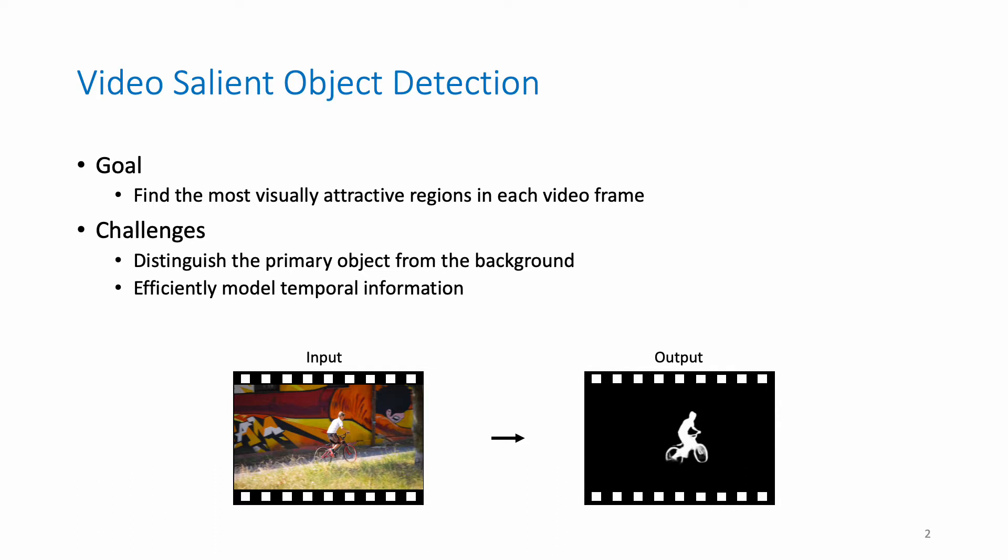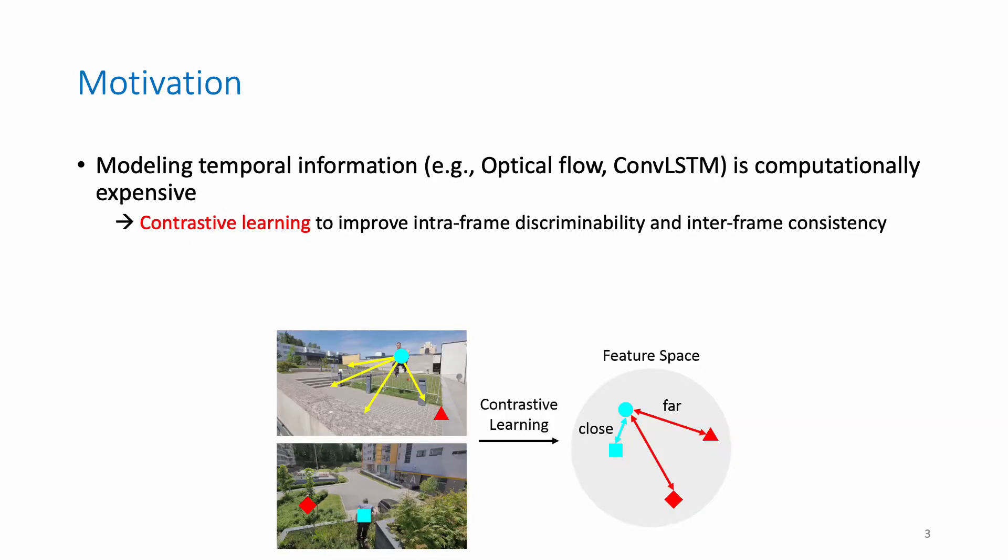The challenging part of this task is to distinguish the primary object from the background and efficiently model the temporal information. The motivation of this work is that previous methods usually use Optical Flow or ConvLSTM to model temporal information, which are computationally expensive.